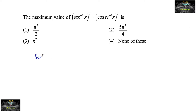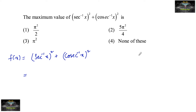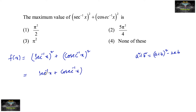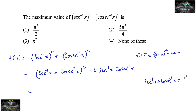Find the maximum value of (sec⁻¹x)² + (csc⁻¹x)². We consider this as f, and use the identity a² + b² = (a+b)² - 2ab. Applying this, we write (sec⁻¹x + csc⁻¹x)² - 2·sec⁻¹x·csc⁻¹x. Since we know that sec⁻¹x + csc⁻¹x = π/2, we substitute accordingly.